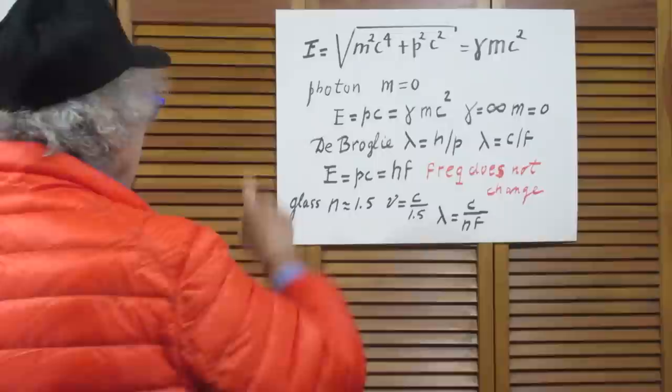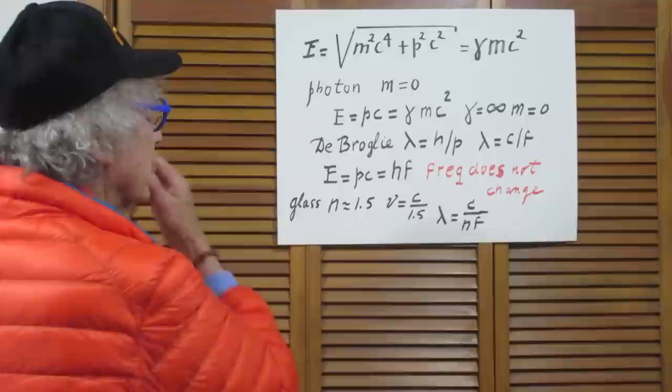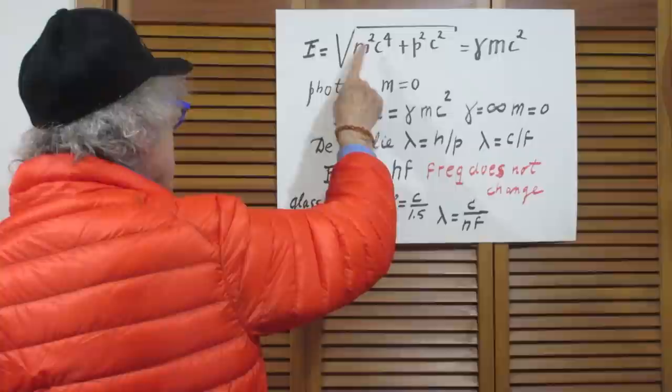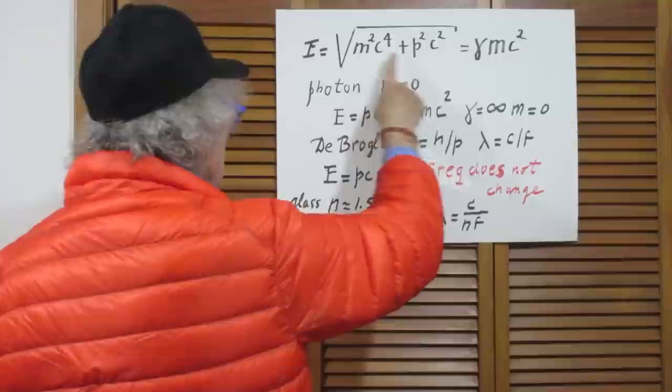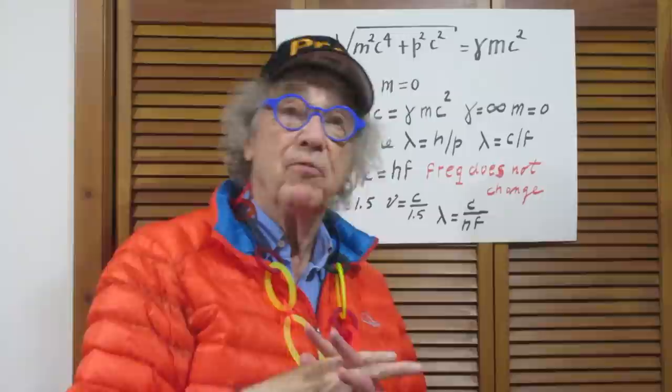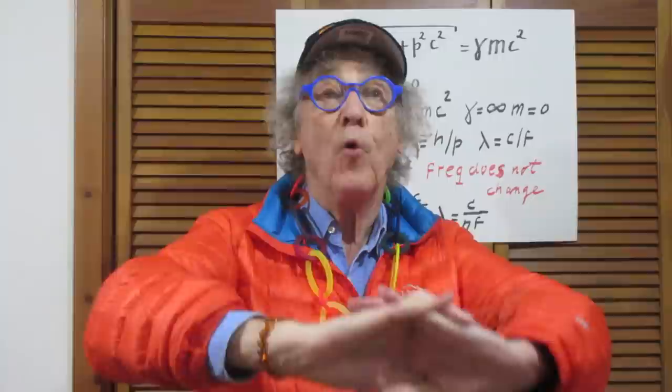Einstein's theory of special relativity: The energy of any particle, including photons, is the square root of m squared c to the fourth plus p squared c squared. m is the rest mass. c is the speed of light in vacuum. p is the momentum. This is also equal to gamma mc squared. Gamma is the famous Lorentz contraction factor: 1 divided by the square root of 1 minus beta squared, and beta is v over c.